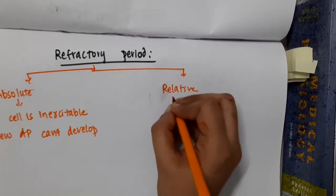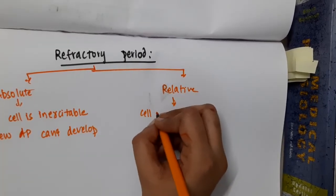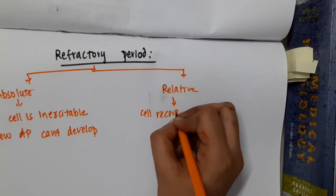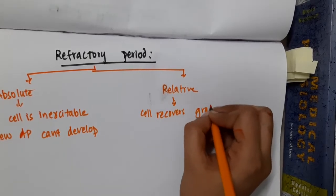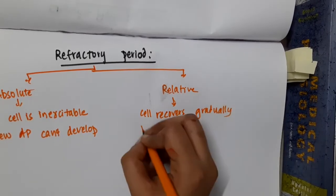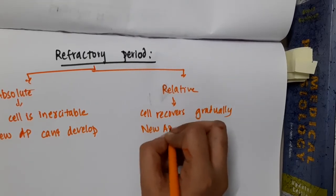But in relative refractory period, the cell recovers gradually and new action potential can develop.